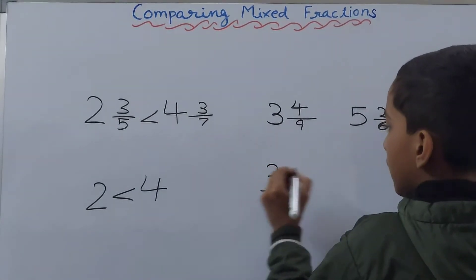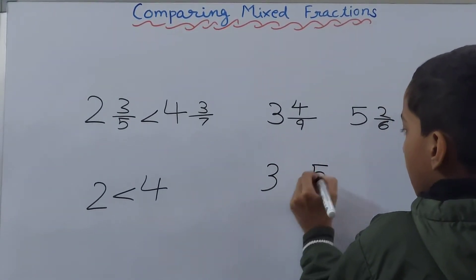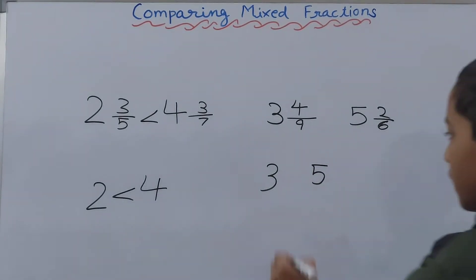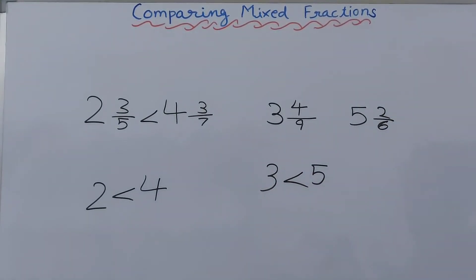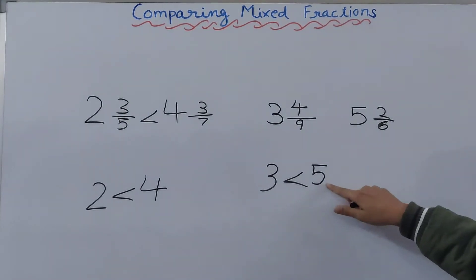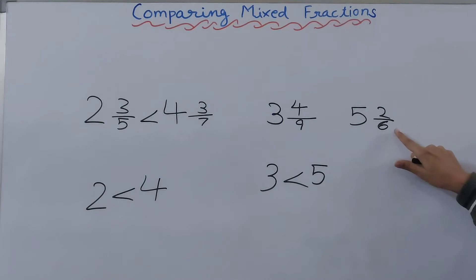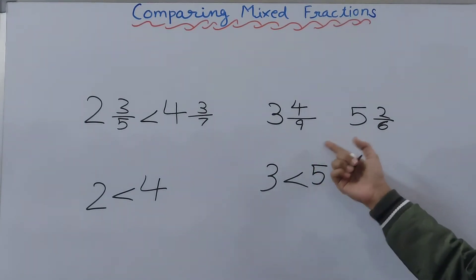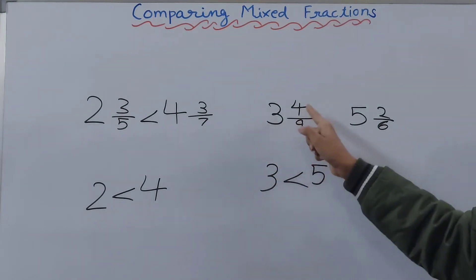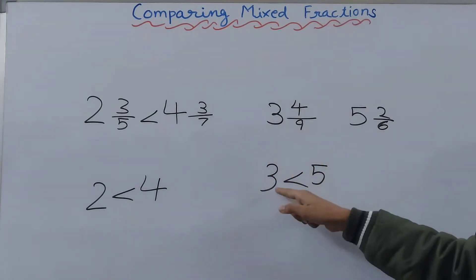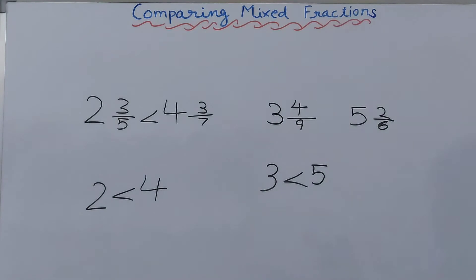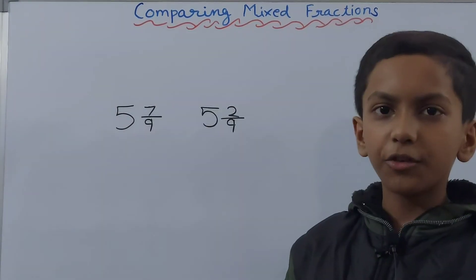Our whole numbers are three and five. Five is obviously bigger than three. So this means five whole and two upon six is the greater fraction, and three whole and four upon nine is the smaller fraction here.